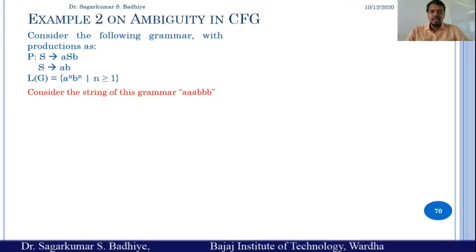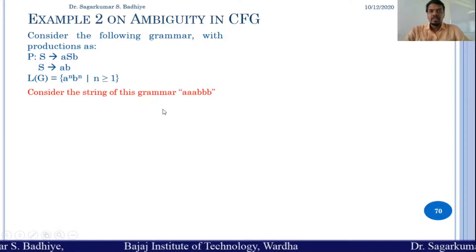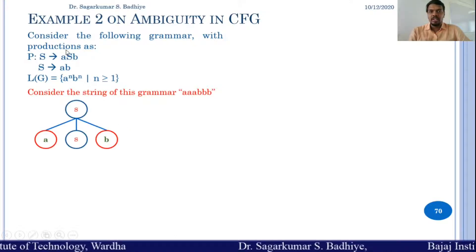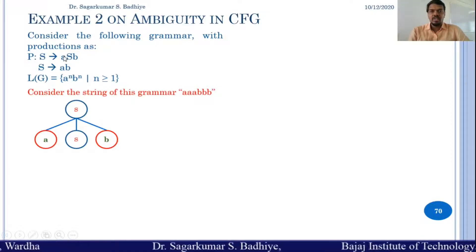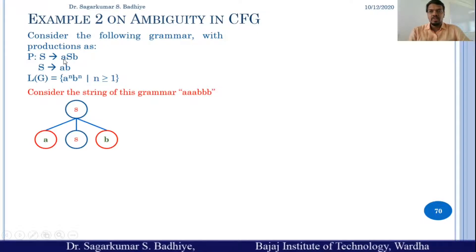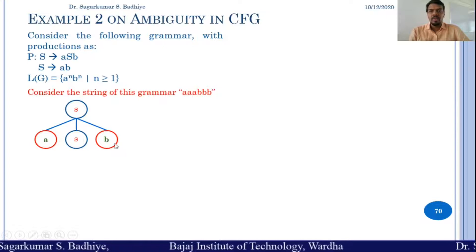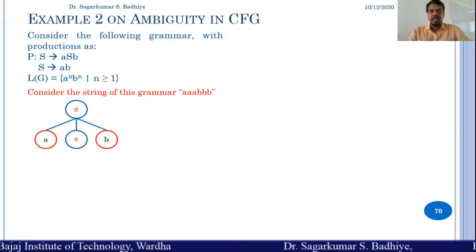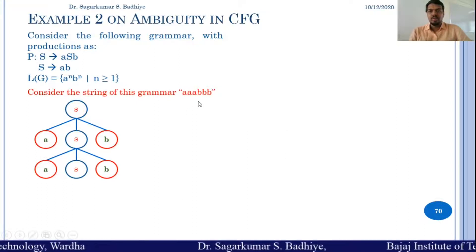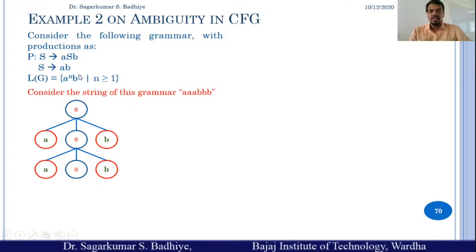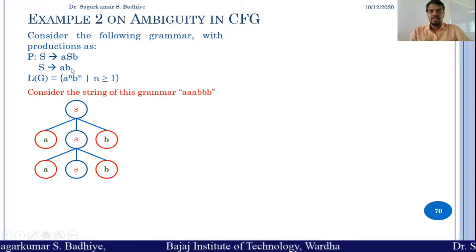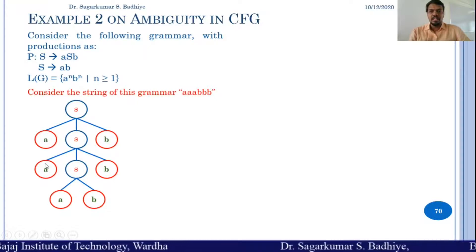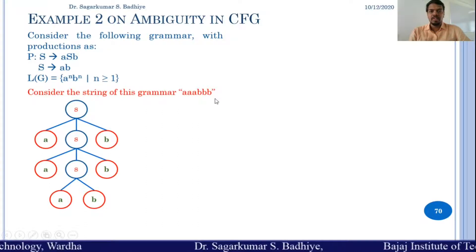Consider the string aaabbb in the grammar. This can be derived using the given production rules as follows: s is the root node; since the string starts with a, we use the first production rule s → asb. There are multiple a's, so the leftmost s at the second level is replaced again by asb. Again, for the third a followed by three b's, we use the second production rule s → ab. So the last s is replaced by ab, generating aaabbb, which matches the given string.